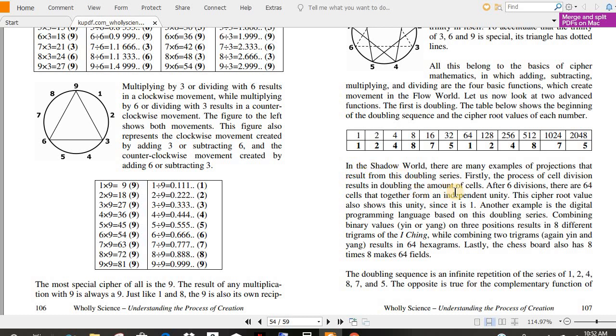In the shadow world, there are many examples of projections that result from this doubling series. Firstly, the process of cell division results in doubling the amount of cells. After six divisions, there are 64 cells that together form an independent unity, just like the I Ching, 64. The cipher root value also shows this unity, since it is one. Another example is the digital programming language, just what I was just talking about, based on the doubling series, combining binary values, yin or yang, on or off, on three positions, results in eight different trigrams of the I Ching.